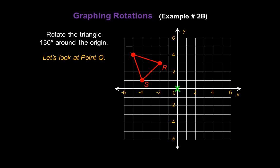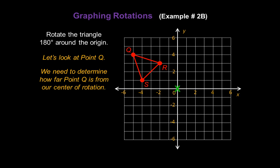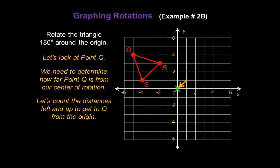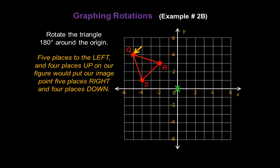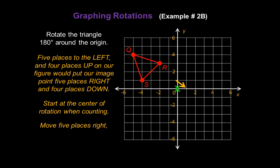Let's look at point Q in our figure to begin. We need to determine how far point Q is from our center of rotation. Let's count the distances left and up to get to Q from the origin: five places to the left and four places up. Five places left and four places up on our figure would put our image point five places right and four places down — we start at the center of rotation when counting. So let's move five places to the right and four places down. This is now our point Q prime.